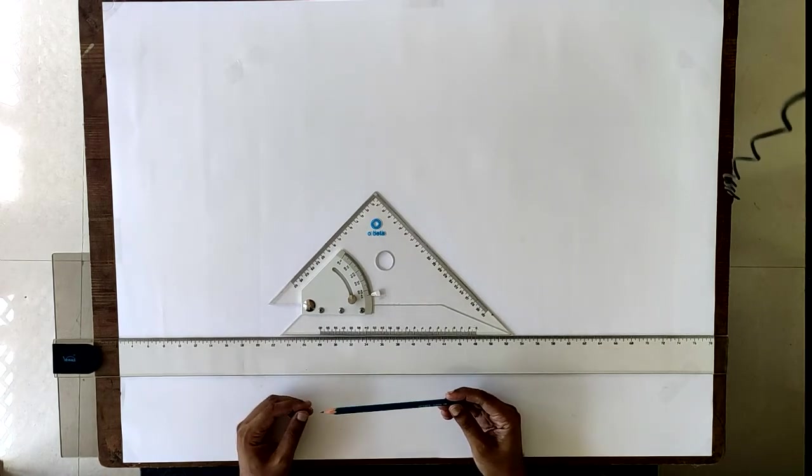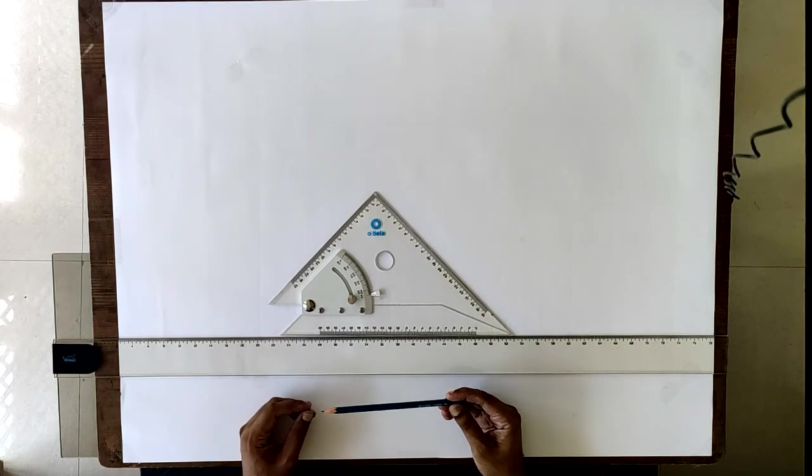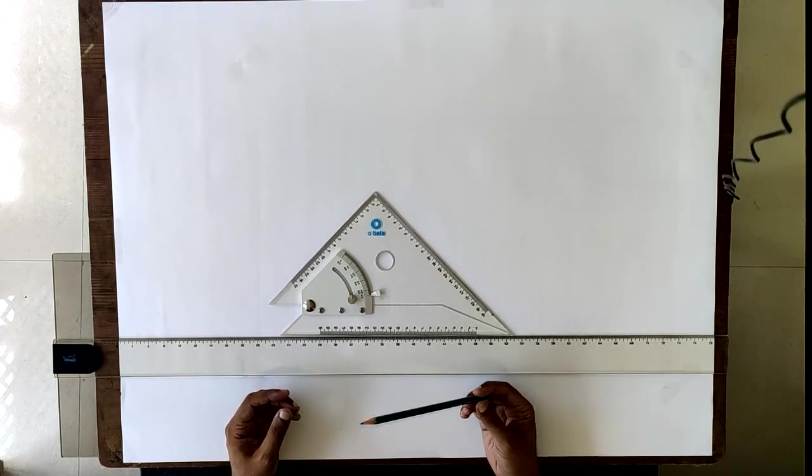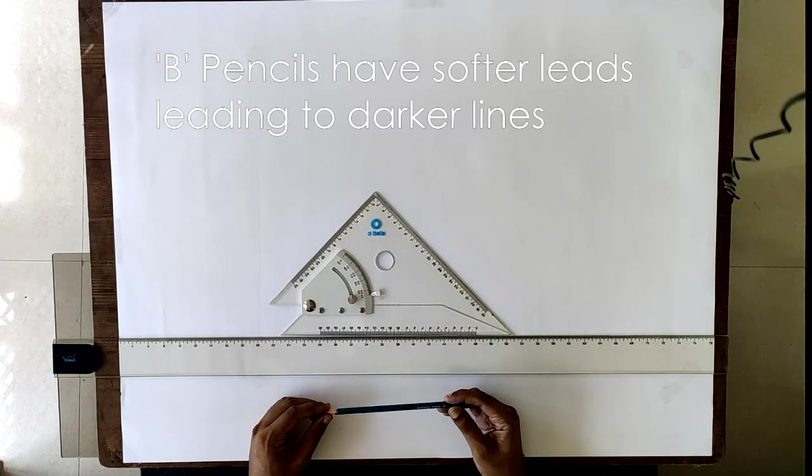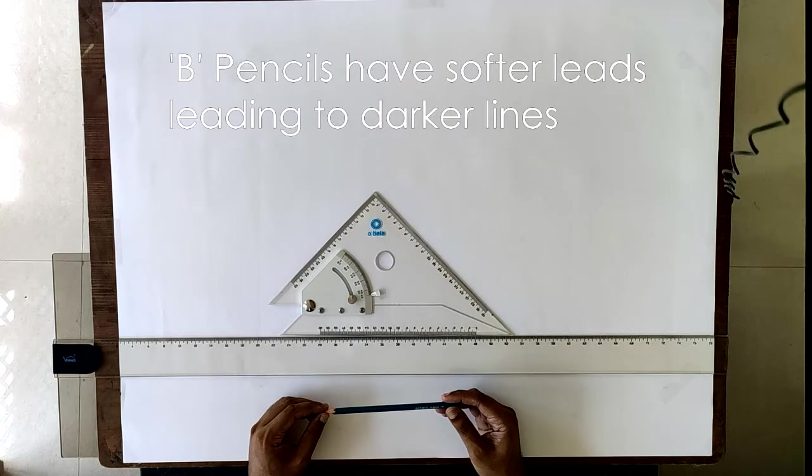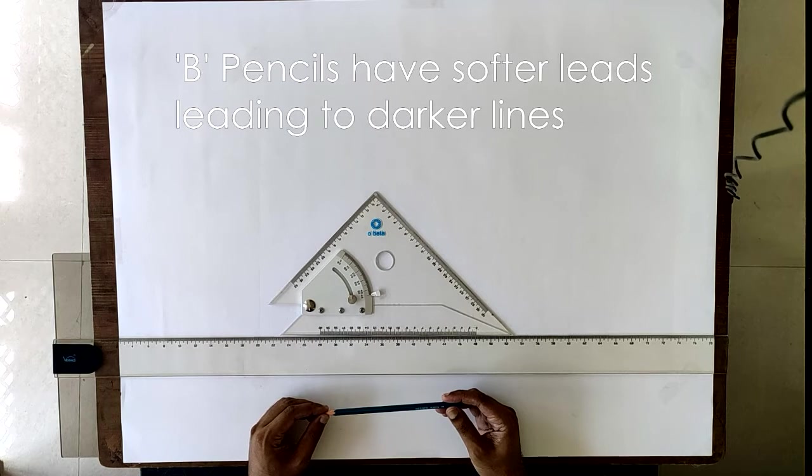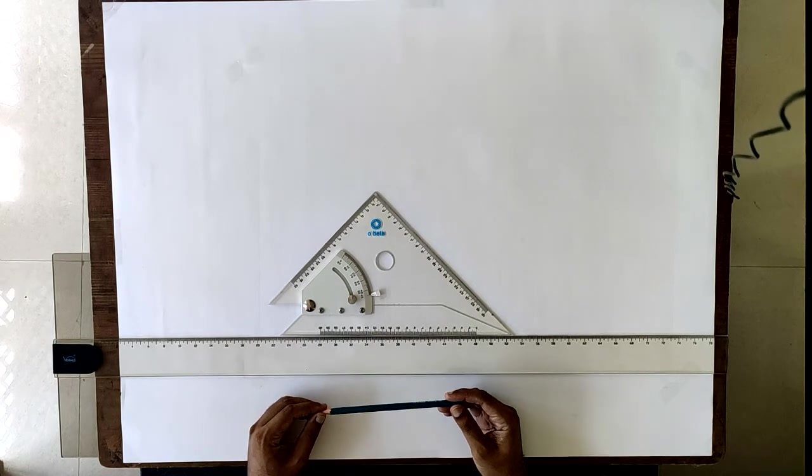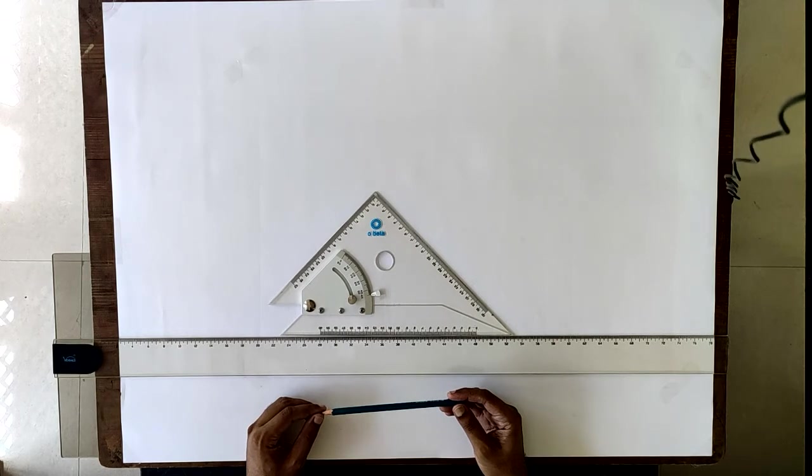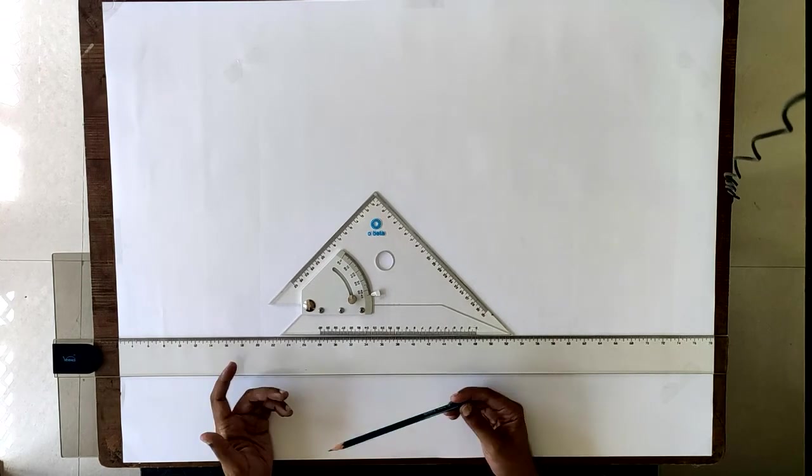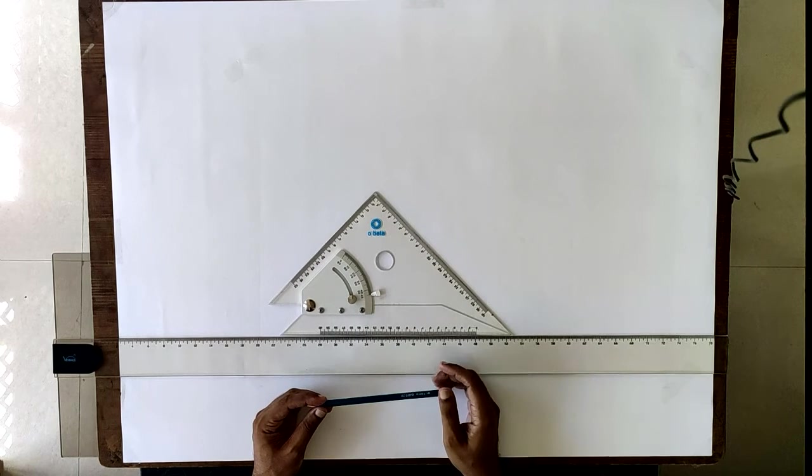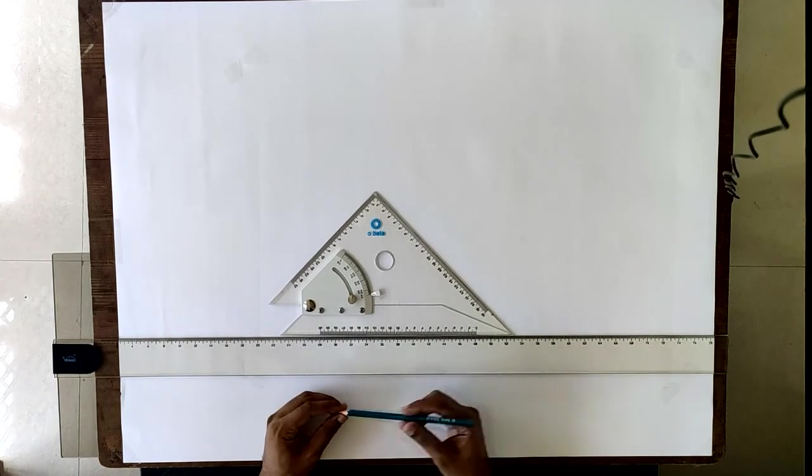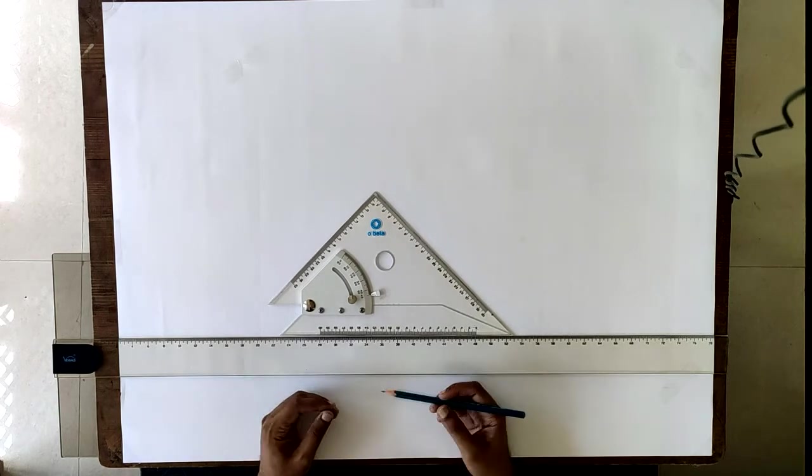For example, 9H lines will be much lighter than 8H lines. 8H lines will be lighter than 7H lines. HB is actually midway in the spectrum, so it is neither soft nor hard. It gives an average kind of line.